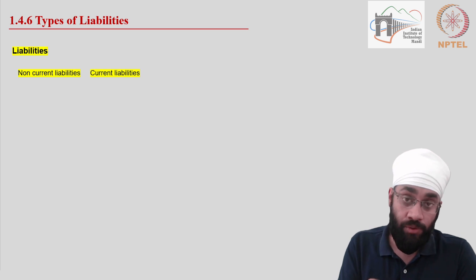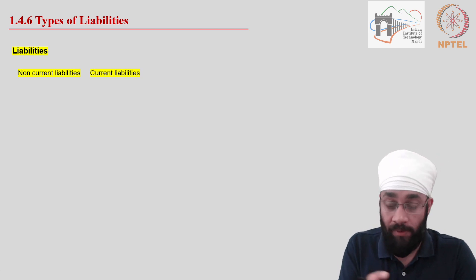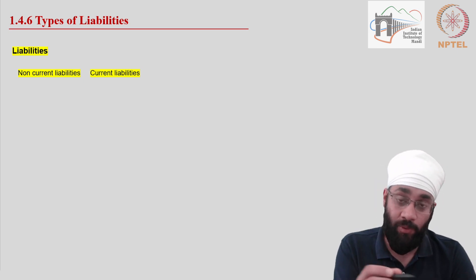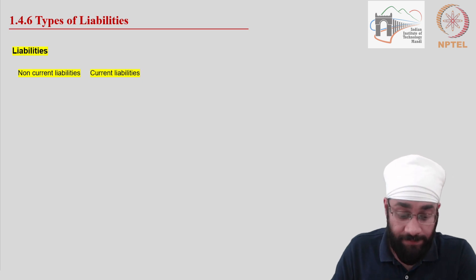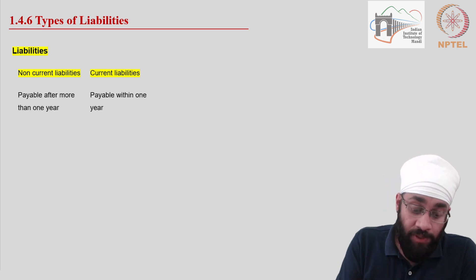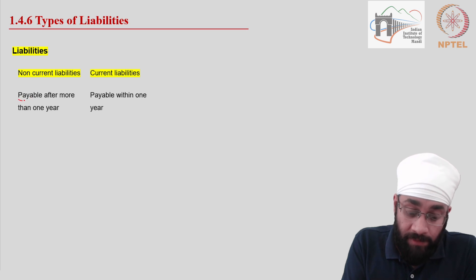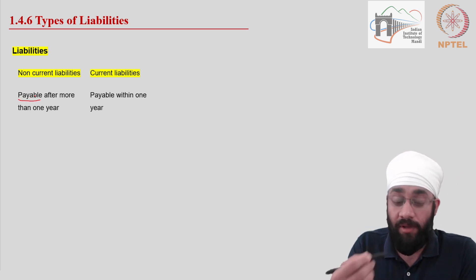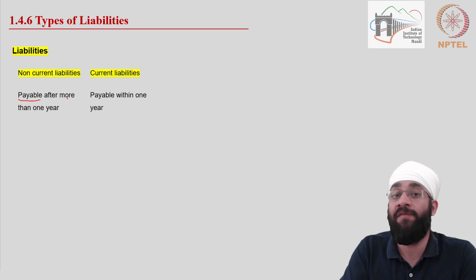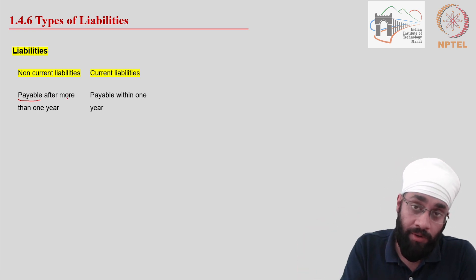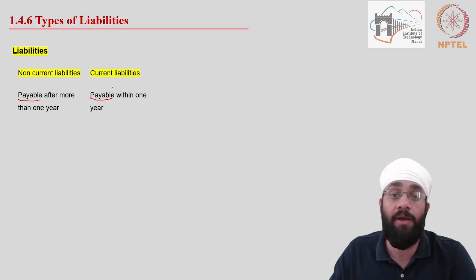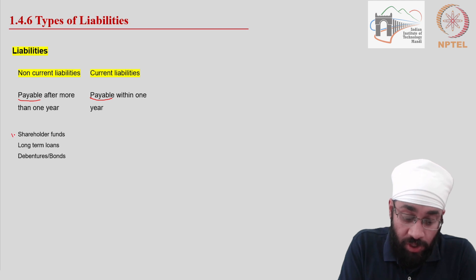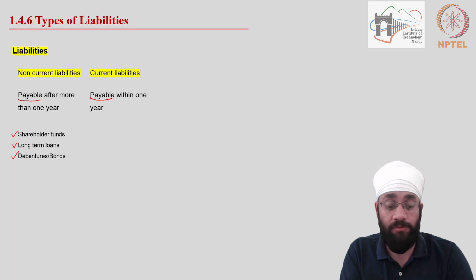Let's talk about types of liabilities. Liabilities can also be categorized into two: non-current and current. Payable liabilities are payables — money you have to return. If you have to return the money after one year, you call it a non-current liability. If you have to return the money within one year, you call it a current liability. Simple as that.